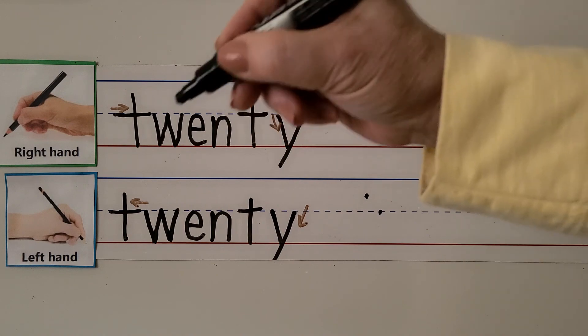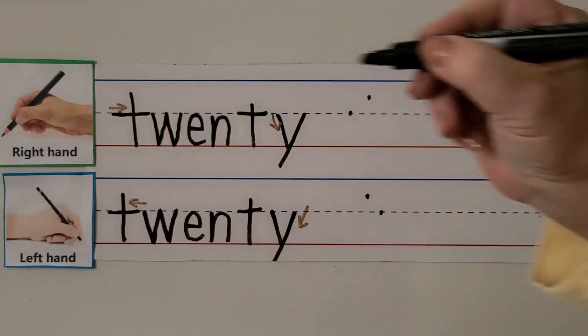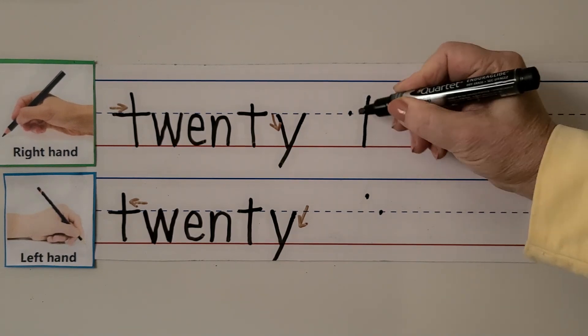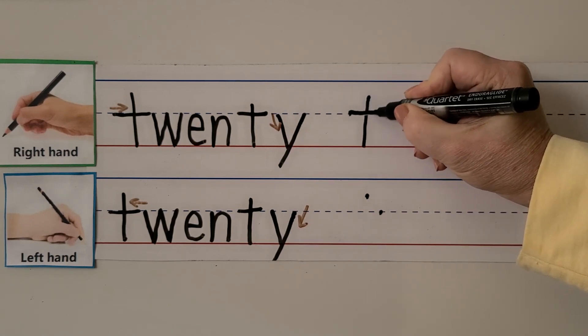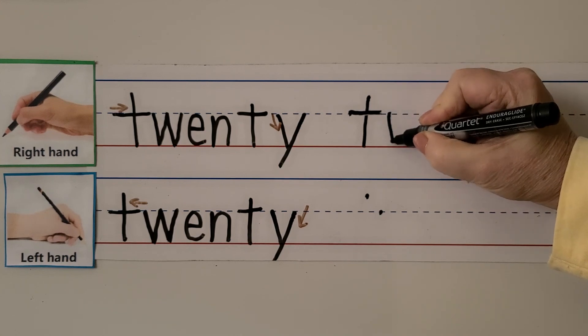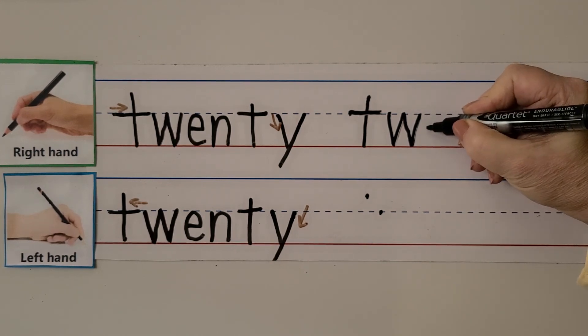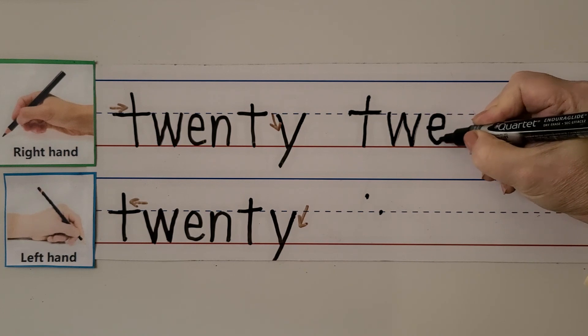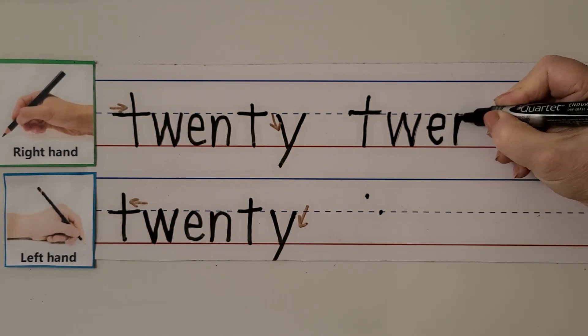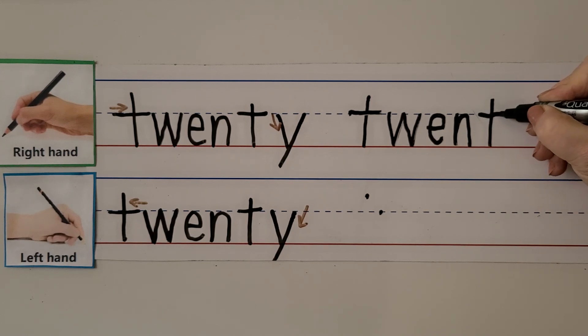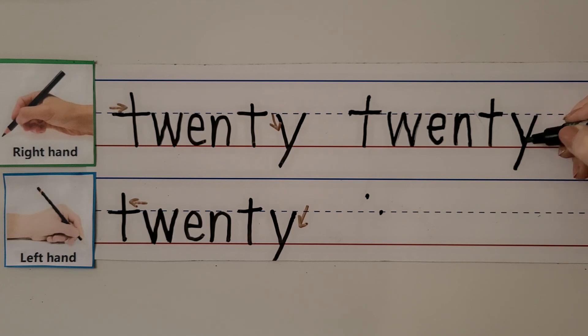We can write the word twenty with our right hand. Start with the T above the dashed line, come straight down to the bottom line, go on the left side and cross towards our hand. Make a W: down, up, down, up. Make an E. Make an N. Make a T again. Make a Y: you can start here and bring this line down into the basement, or start here and bring this line over. Twenty.